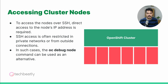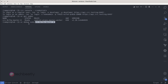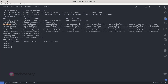To access the cluster nodes, we will utilize the powerful OC DebugNode command. This command allows us to access the node using a special shell prompt. It's important to note that the OC DebugNode command is not based on SSH protocols. When you run OC DebugNode, it opens a shell prompt and mounts the host root filesystem under the host directory. This gives us access to the node's filesystem.